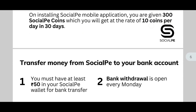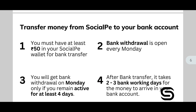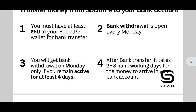The next slide covers transferring money from Social Pay to your bank account. There are four conditions: first, you must have at least 50 rupees in your Social Pay wallet for a bank transfer. Second, bank withdrawal is open every Monday only — one day per week. Third, you will get bank withdrawal on Monday only if you remain active at least four days out of seven days in that week.